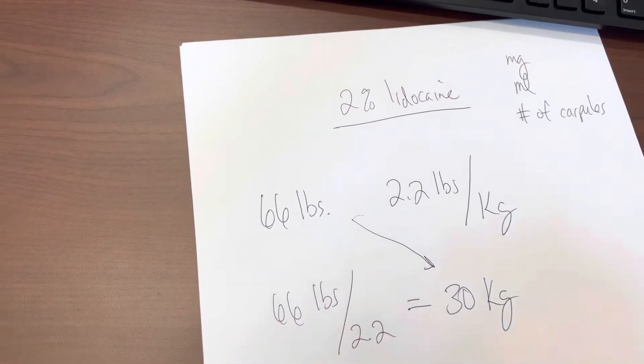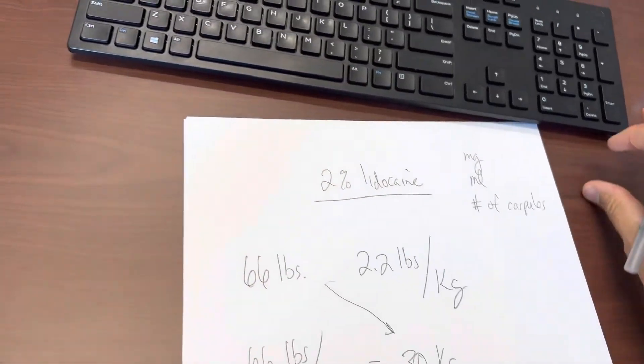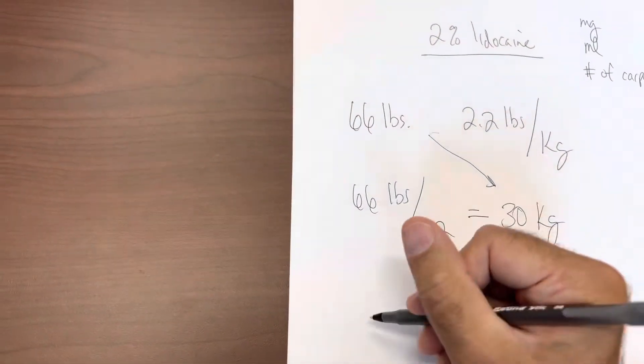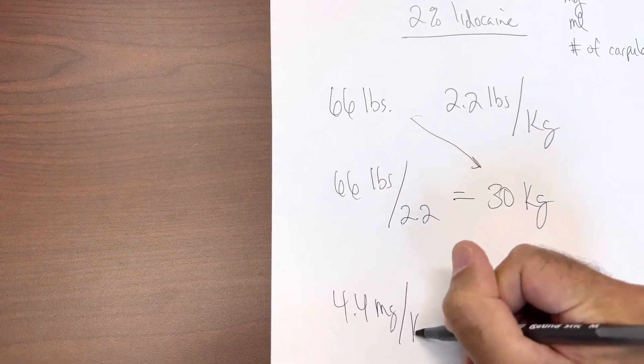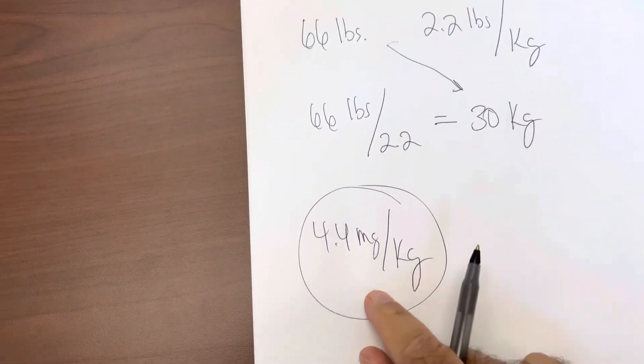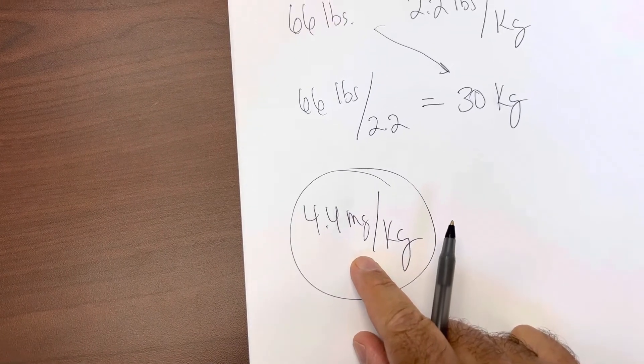Okay, so we also know that when we're using lidocaine, there's a couple numbers that we should be aware of. One is going to be the maximum dose that we want you to use is going to be 4.4 milligrams per kilogram. You just have to remember this. And it might be on the test that'll tell you the maximum dose that you can give is 4.4 milligrams per kilogram.